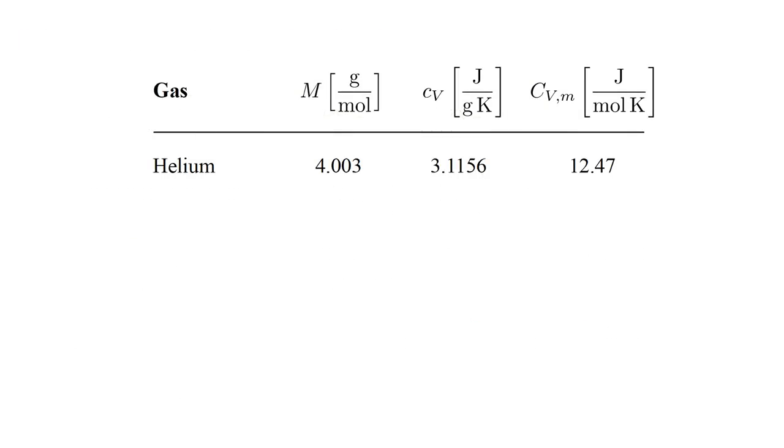Let's see if this is true. Helium, which is monatomic, has a molar mass of 4.003 grams and a specific heat of 3.1156 joules per gram kelvin. Multiplying these, we obtain a molar heat capacity of 12.47 joules per mole kelvin, agreeing with our theory to four digits. Doing the same for neon and argon, we obtain the same molar heat capacity, even though they have very different molar masses and specific heats.